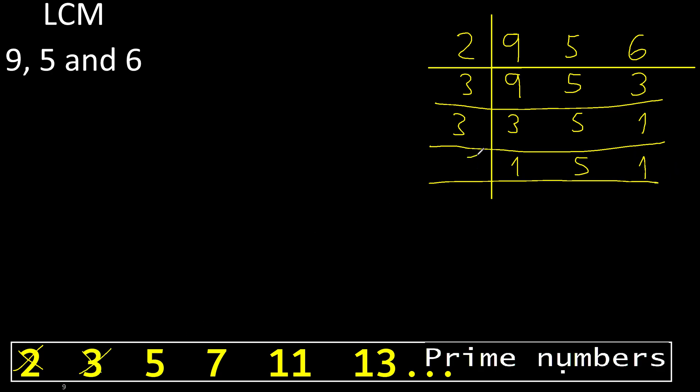Cannot be divided by 3. Divided by 5. 5 divided by 5 is 1. Equal.